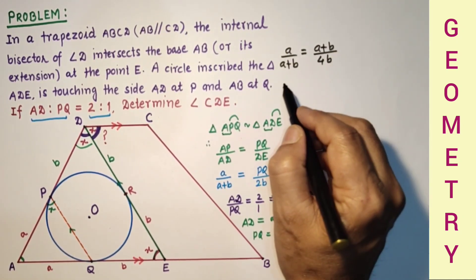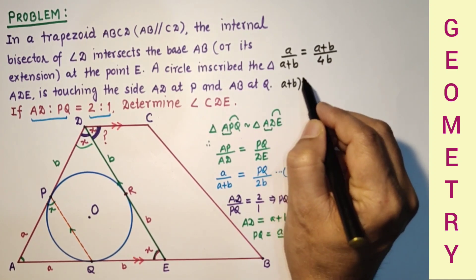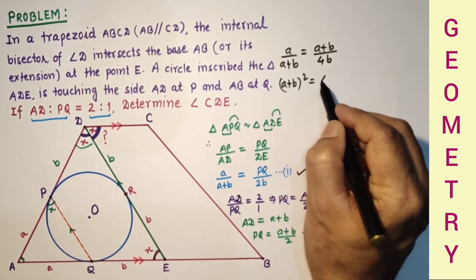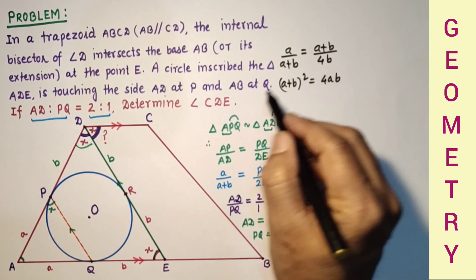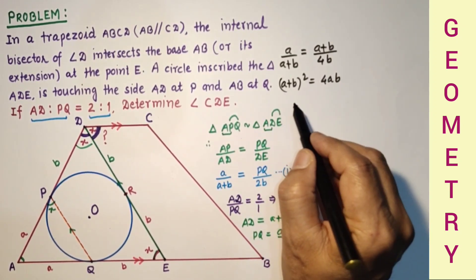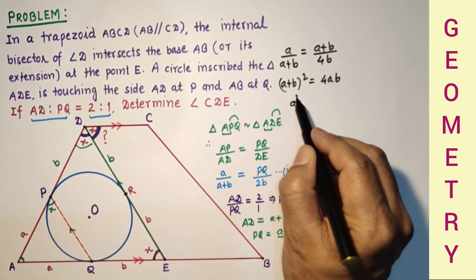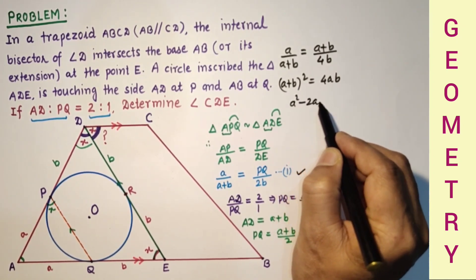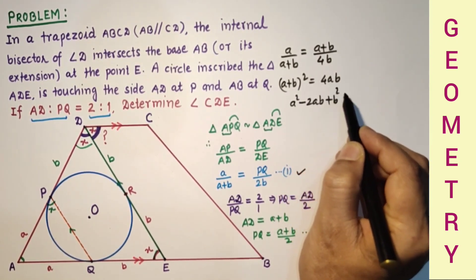Cross multiplication gives A plus B the whole square, which is 4AB. If we simplify it, A squared plus B squared plus 2AB minus 4AB is 0, which is A squared minus 2AB plus B squared is equal to 0.